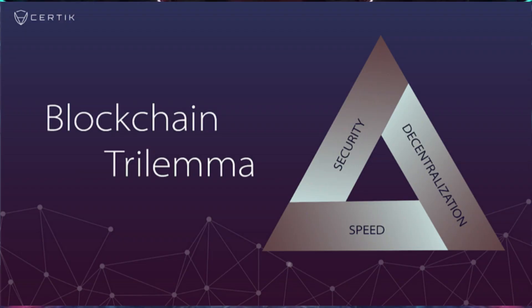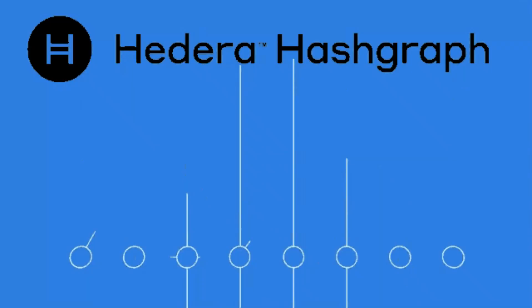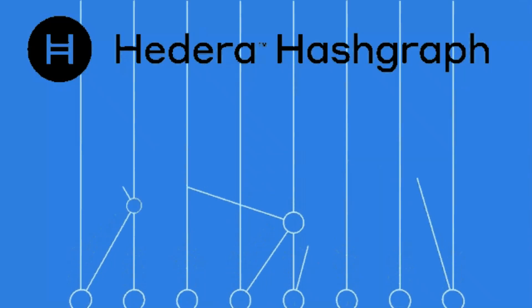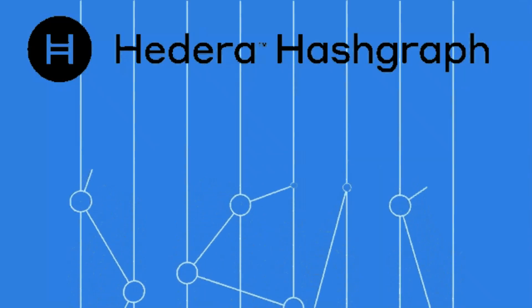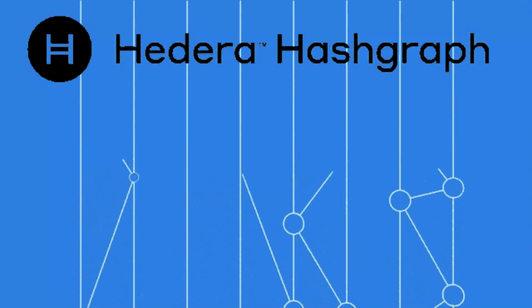There's something in blockchain we call the trilemma — blockchain can only solve two out of three dilemmas. Hedera says that they can solve all three with hashgraph.